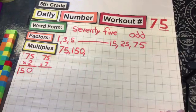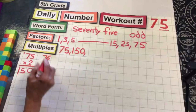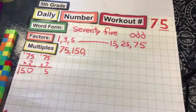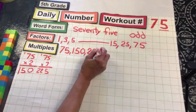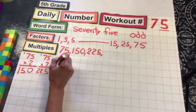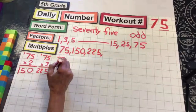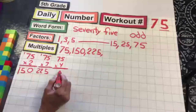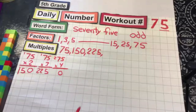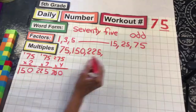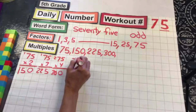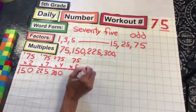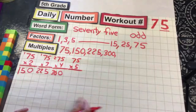3 times 5 is 5, 3 times 7 is 21 plus 1 is 22. So 5 sets of 3.